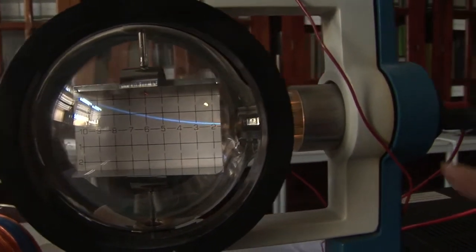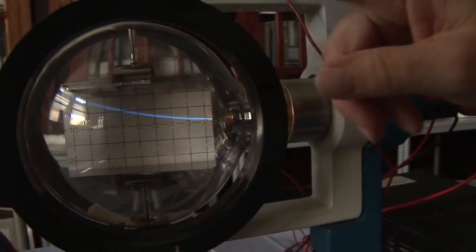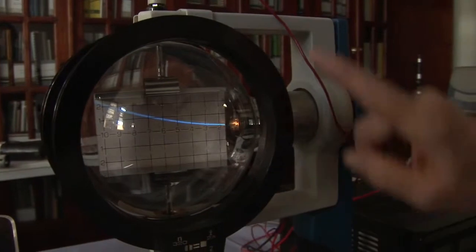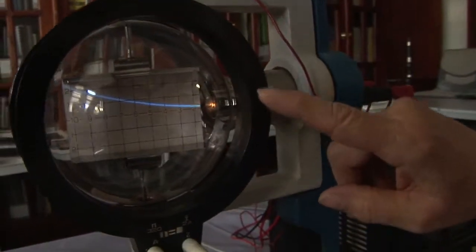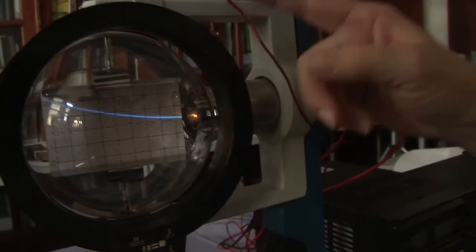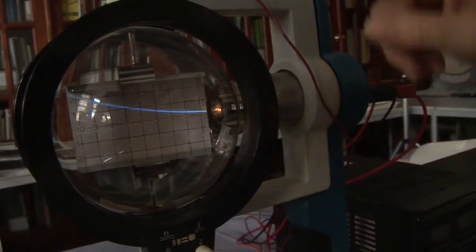This voltage is being supplied to the coils of wire, these Helmholtz coils. And as the electrons run around the coils of wire, they create a magnetic field which goes out and around and through.